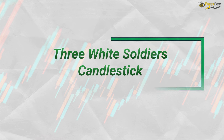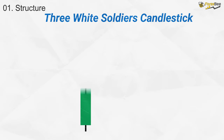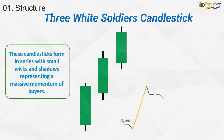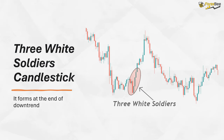Now, let's examine the three white soldiers candlestick pattern. This pattern consists of three consecutive bullish candles, each opening within or near the previous candle's body and closing progressively higher. Each candle has a small wick, showing strong upward momentum with minimal selling pressure. The three white soldiers pattern acts as a powerful bullish reversal signal and typically forms at a support or demand zone, indicating the potential for a sustained uptrend.